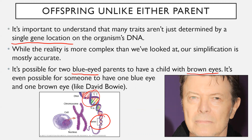It is actually possible for some people to have different colored eyes — one eye one color and the other eye a different color. A very famous example is David Bowie, a well-known musician who passed away a few years ago. He actually did have one blue eye and one brown eye, which relates to the fact that the gene for eye color is located on several different parts of your DNA strand and not just one.